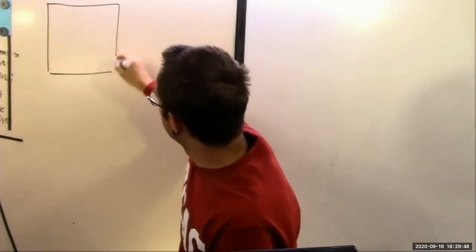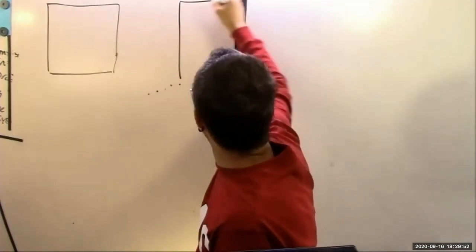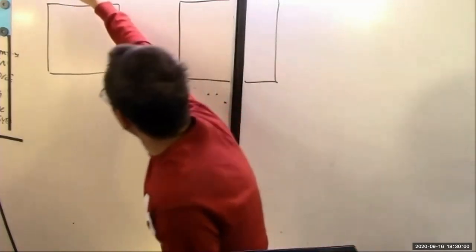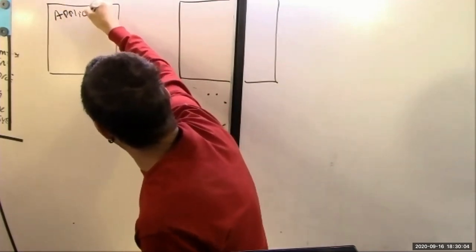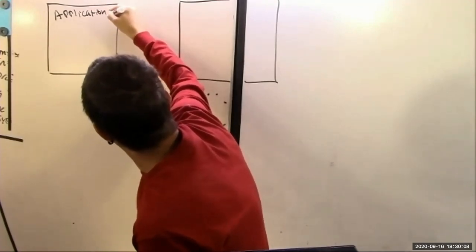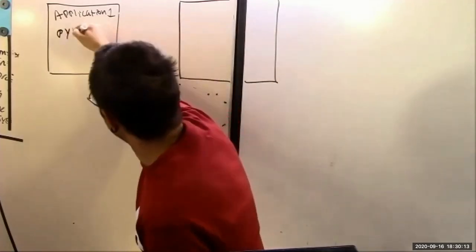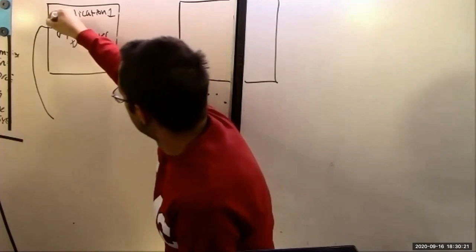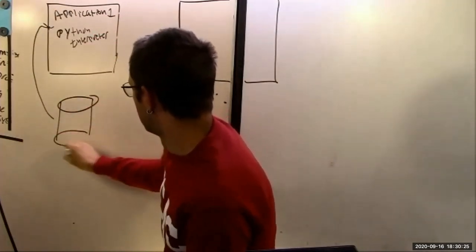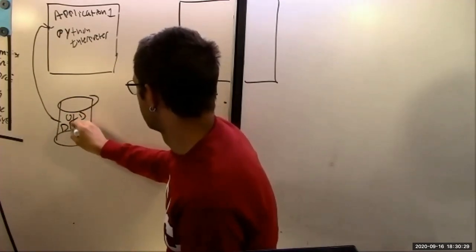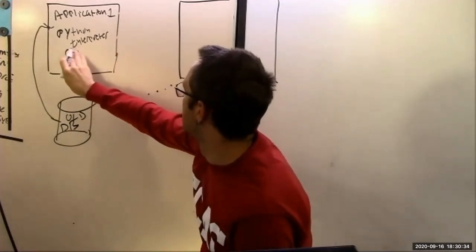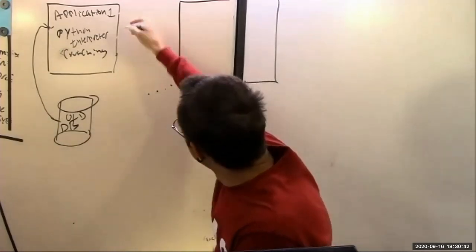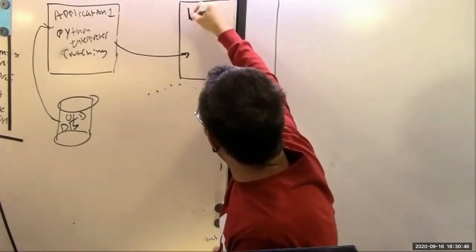What is JSON? JSON is an encoding format that allows for data interchange between platforms that might not otherwise be able to talk to one another. We might call these applications on the same system — application one might be my Python interpreter, and maybe that is getting a bunch of data from a really old database.